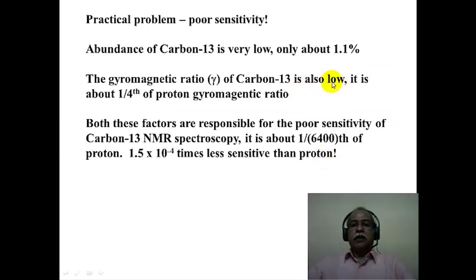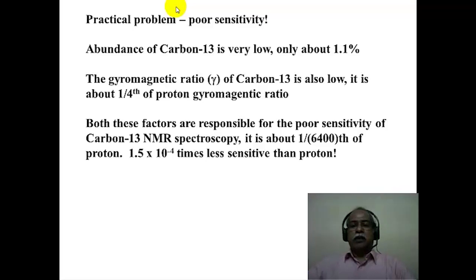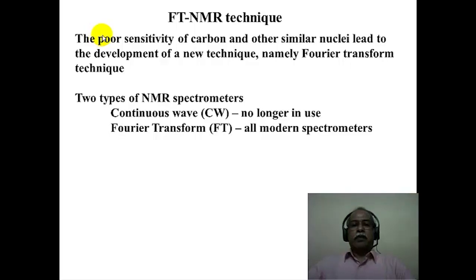There are several practical problems associated with the poor sensitivity of carbon-13 NMR. First, it is a low abundant nucleus — only about 1.1 percent of carbon is NMR active; the rest is carbon-12, which is not NMR active. The gyromagnetic ratio is also low, about one-fourth of the proton gyromagnetic ratio. Both these factors lead to poor sensitivity — carbon-13 spectroscopy is only about 1 in 6400, or about 1.5 × 10⁻⁴ times less sensitive than proton NMR. This necessitated the development of the Fourier transform NMR technique.